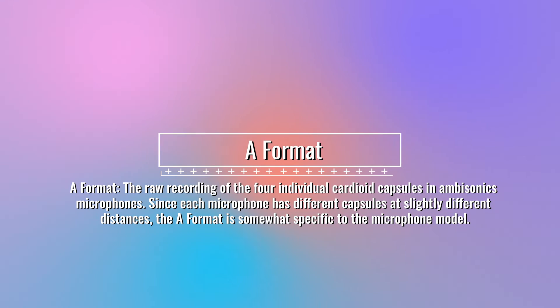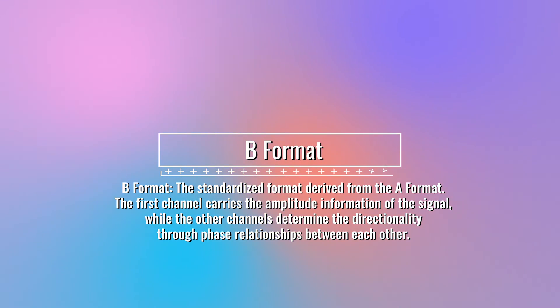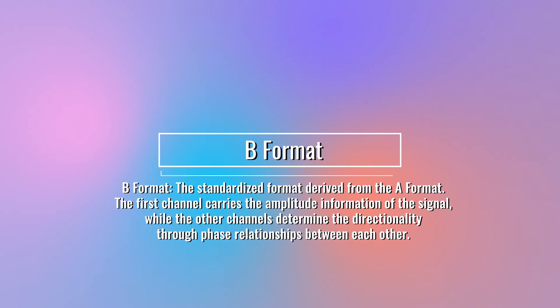Two side notes: you can only do one track of ambisonic audio if it's multi-track in Premiere. There are also two types of ambisonic audio formats — A format and B format. A format is the raw recording of the four individual cardioid capsules in ambisonic microphones. Since each microphone has different capsules at slightly different distances, the A format is somewhat specific to the microphone model. B format is the standardized format derived from A format; the first channel carries the amplitude information while the other channels determine directionality through phase relationships. It will need to be in B format while working in Premiere.